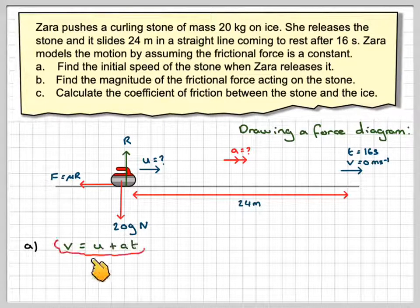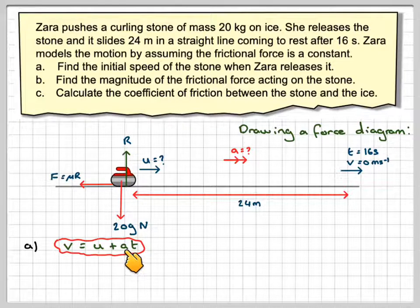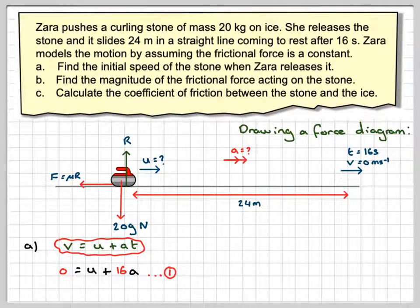So using v is equal to u plus at, because we have a constant frictional force so the acceleration must be a constant. We're going to have that zero is going to be equal to the initial speed that we need to find plus 16 times a. 16 is the amount of time. Now we'll call that equation 1.